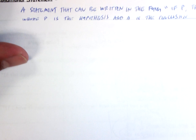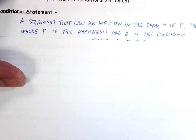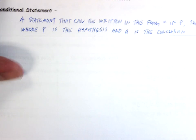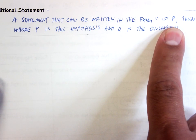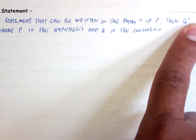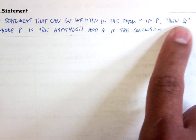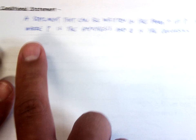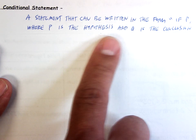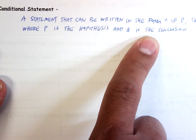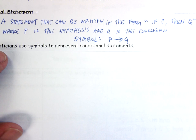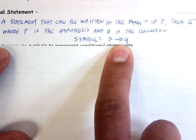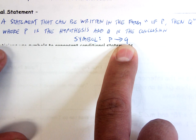This section is super vocabulary-heavy. A conditional statement is a statement that can be written in the form 'if P, then Q.' For example: if it rains outside, then the grass is going to get wet. In symbols, we write P → Q, which we read as 'if P, then Q.'